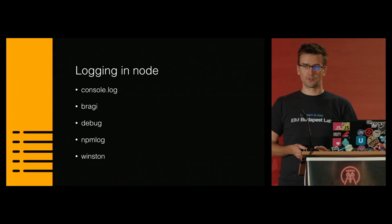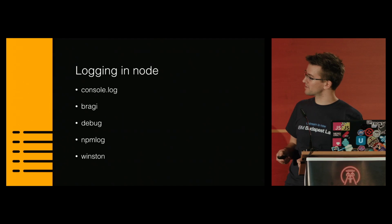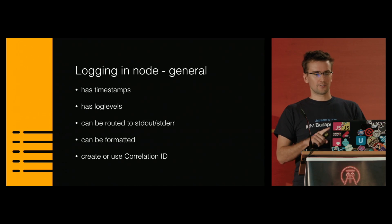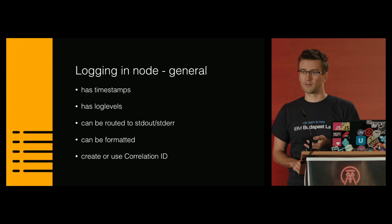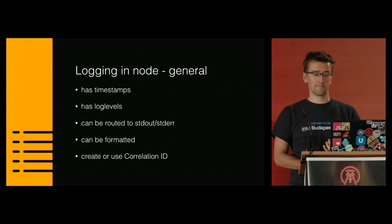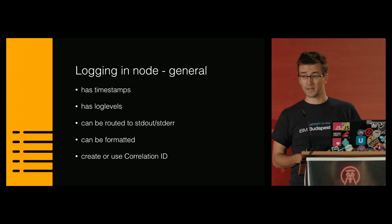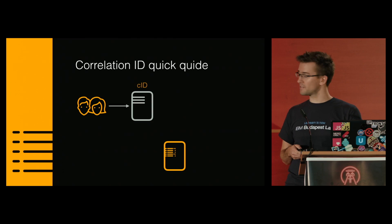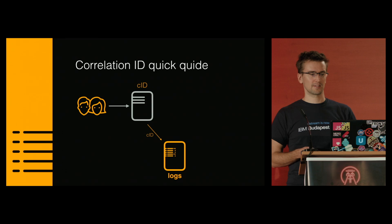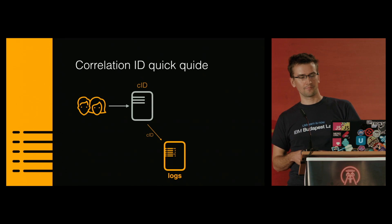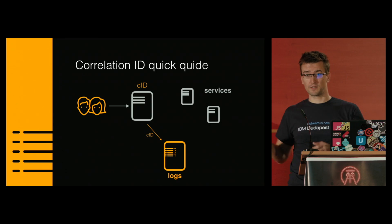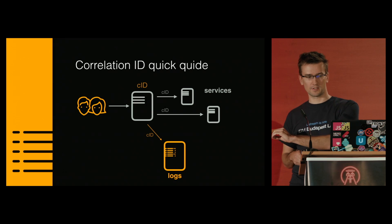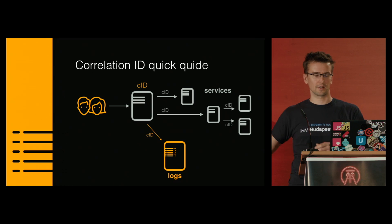Some relatively known logging libraries for Node.js range from the simplest like console.log to more elaborate stuff like Bragi. In general, a good logger has to have timestamps, log levels, route to standard output or standard error, ability to format the logs — very important — and create or accept a correlation ID. When a new request arrives from the user, we create an ID that will identify this request. This is the correlation ID. We do our logging by sending this ID and referencing it to the logging server. When our service uses other services in our environment, they also add this correlation ID to all outgoing requests.